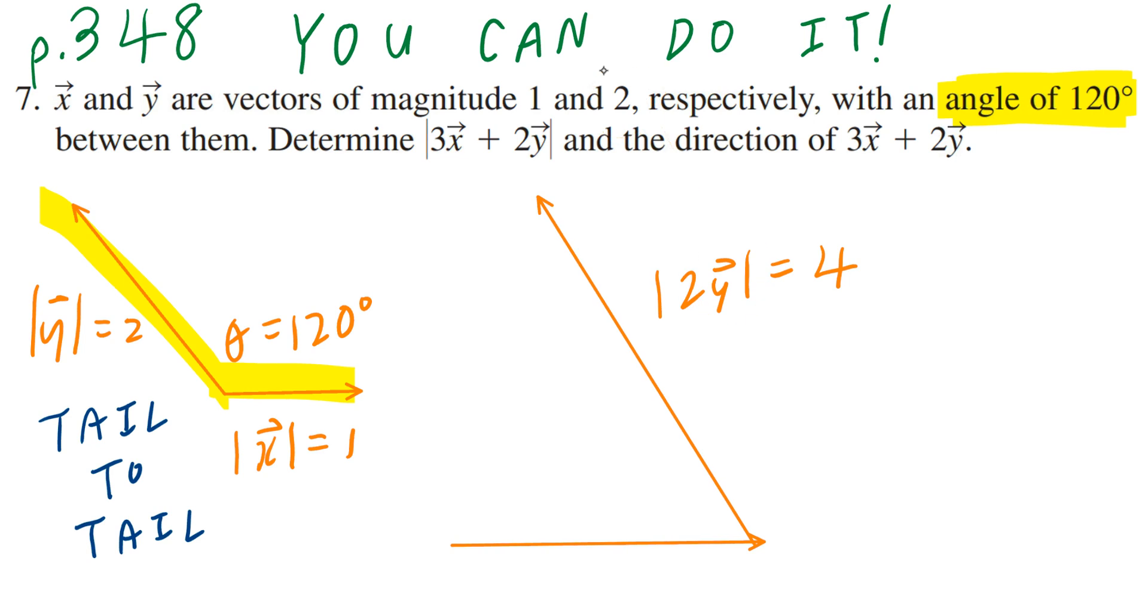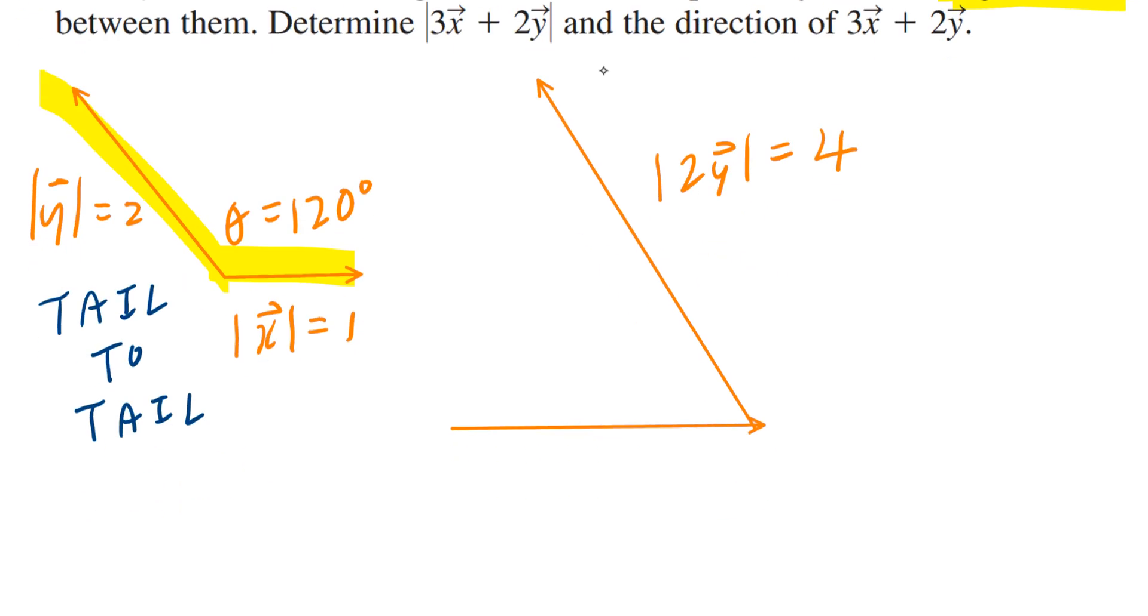And if you look at the bottom vector, that's going to be 3 times x. And 3 times x in terms of magnitude, the answer is going to be 3. Again, the magnitude is 1, 3 times 1, 3.